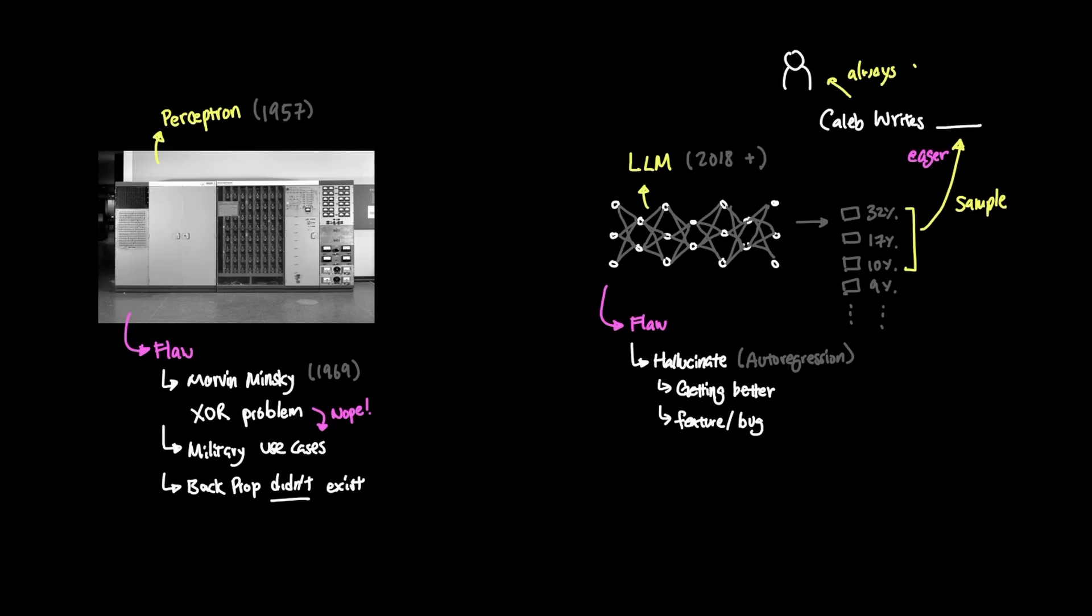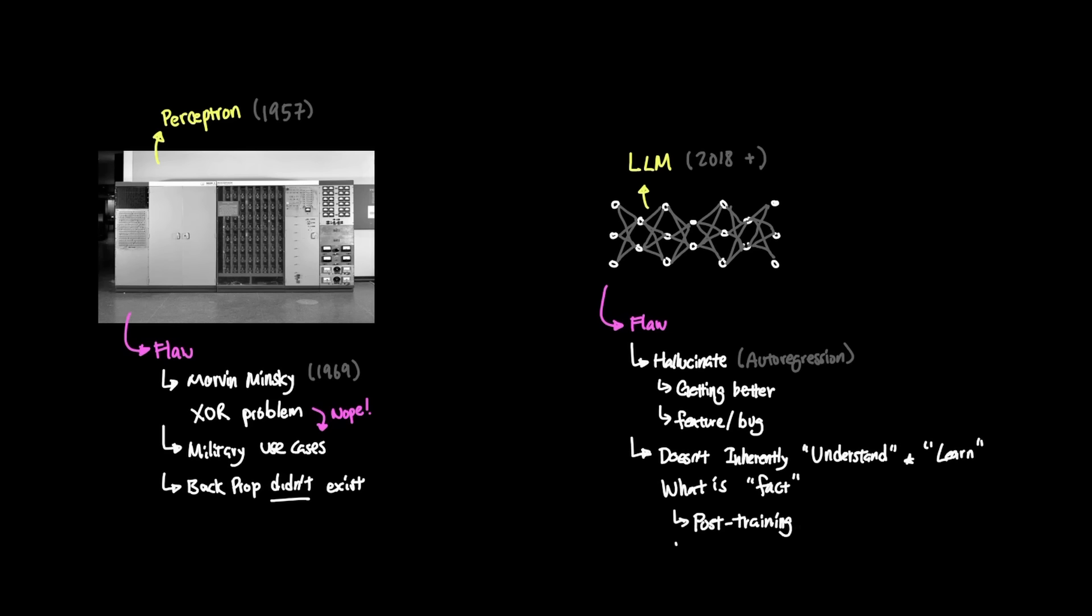For this reason, we always have to check the answers from LLMs. Another flaw of LLM is that it inherently doesn't actually understand or learn. And more importantly, the LLM doesn't inherently know what is a fact and what isn't. Currently, we employ various techniques in post-training, and we also use credible pre-training data to maximize the model's ability to actually discern what is and isn't factual.